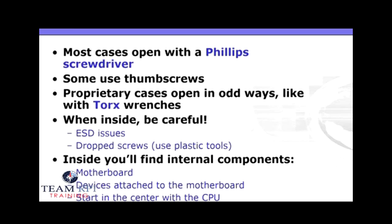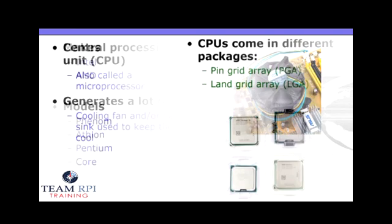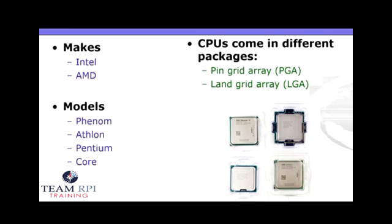Now that we're inside, you can find all of these internal components we've spoken about — like the motherboard, devices attached to the motherboard, and of course it all starts in the center with the CPU. The CPU, or microprocessor, generates a lot of heat, so you'll see a dedicated fan sitting on top of it to keep it cool. There are several makes and models to choose from. Understand there are two basic makes — Intel or AMD — and then different types of packages, whether it be a pin grid array or a land grid array.